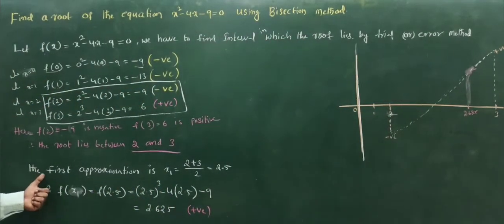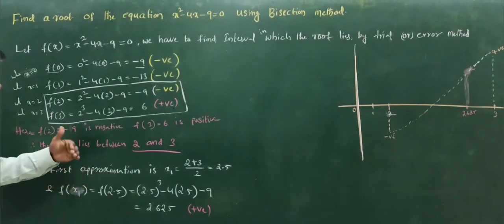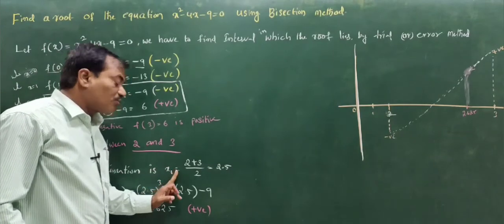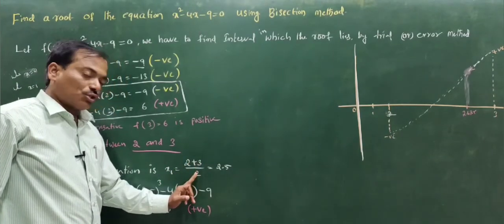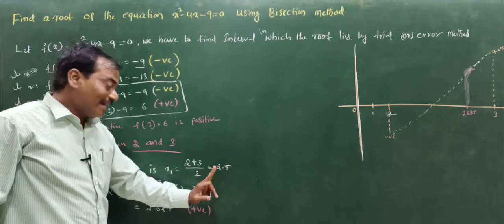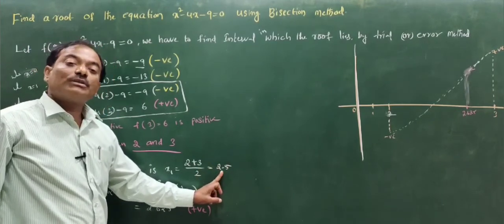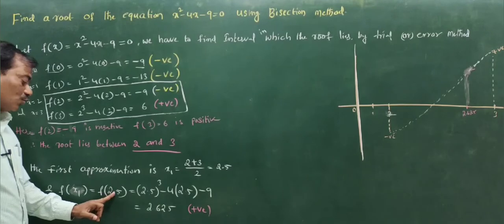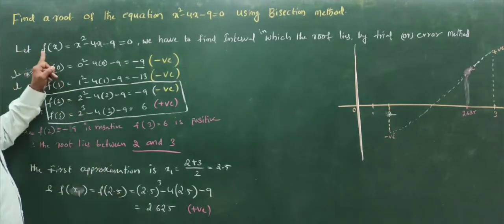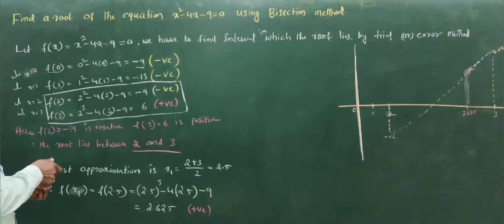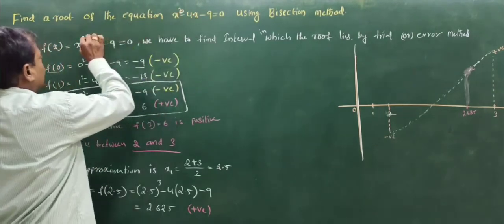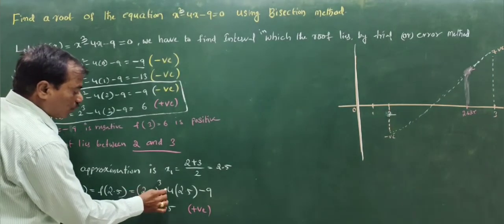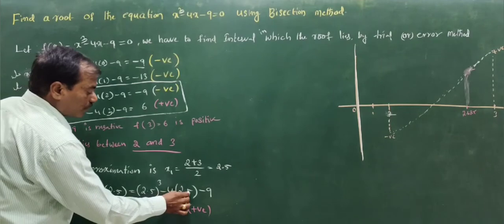Now we find the first approximation. x1 = (2 + 3) / 2 = 2.5. Note: please correct the equation — it is x cubed, not x squared. So f(x) = x³ minus 4x minus 9. We evaluate f(2.5) = (2.5)³ minus 4(2.5) minus 9.